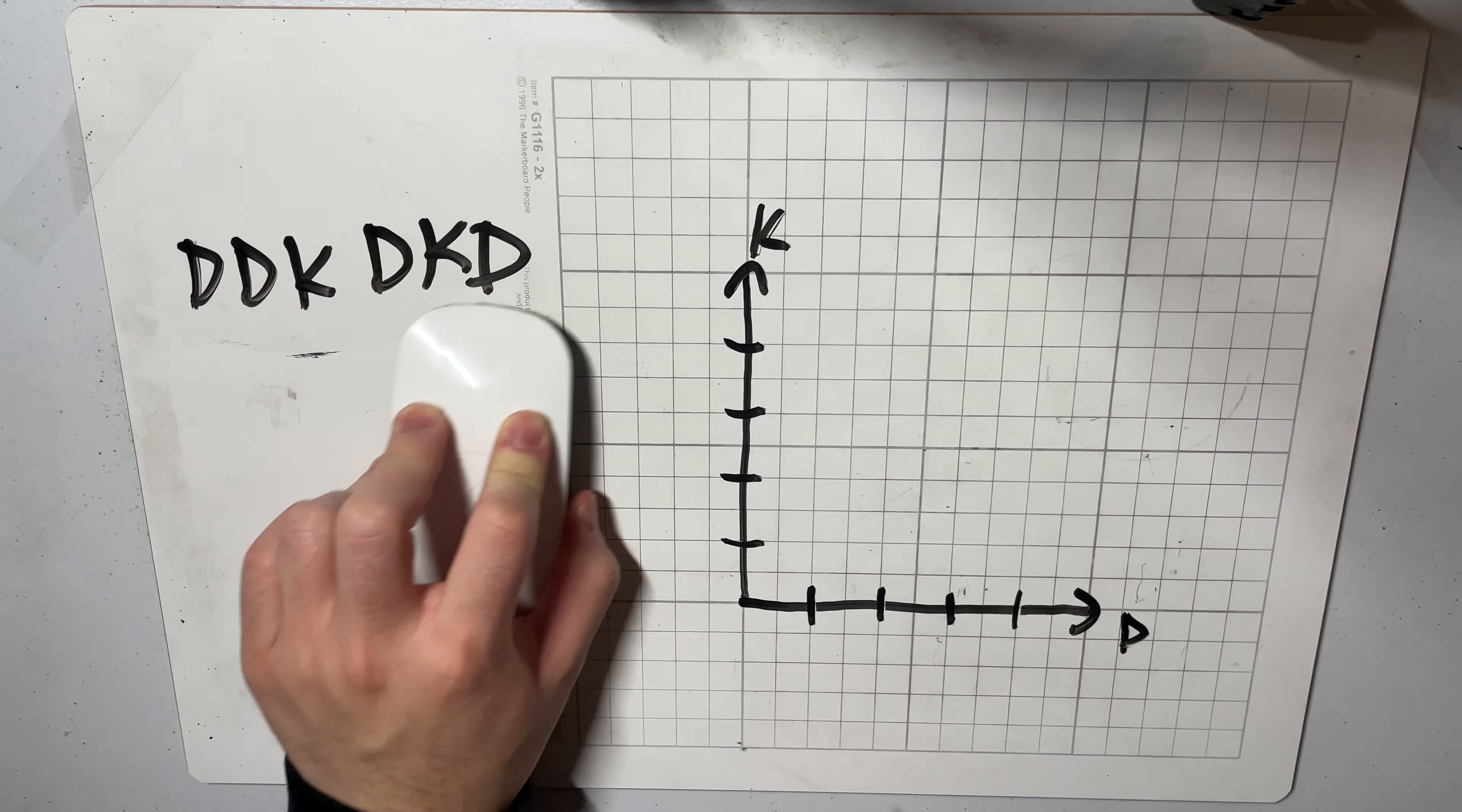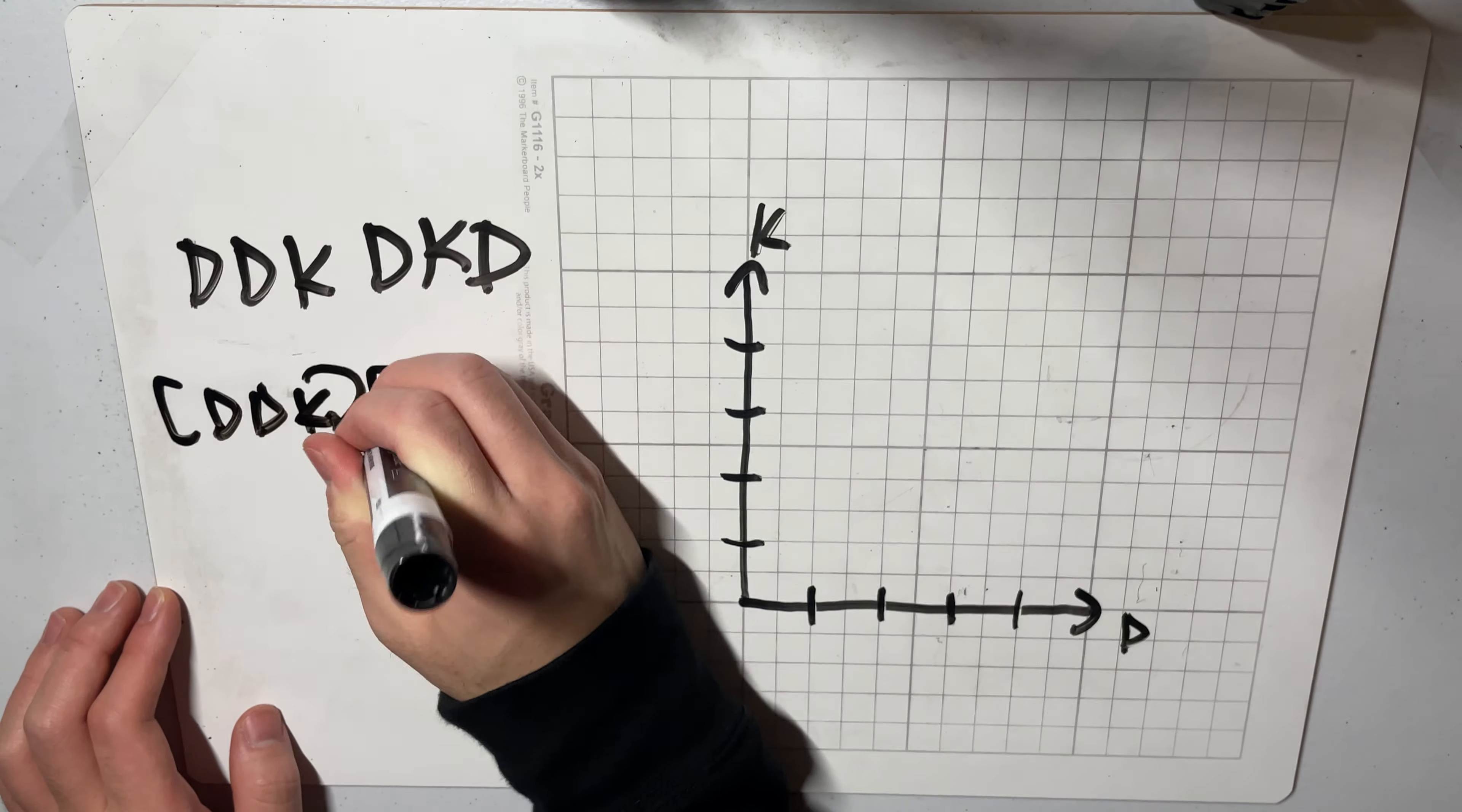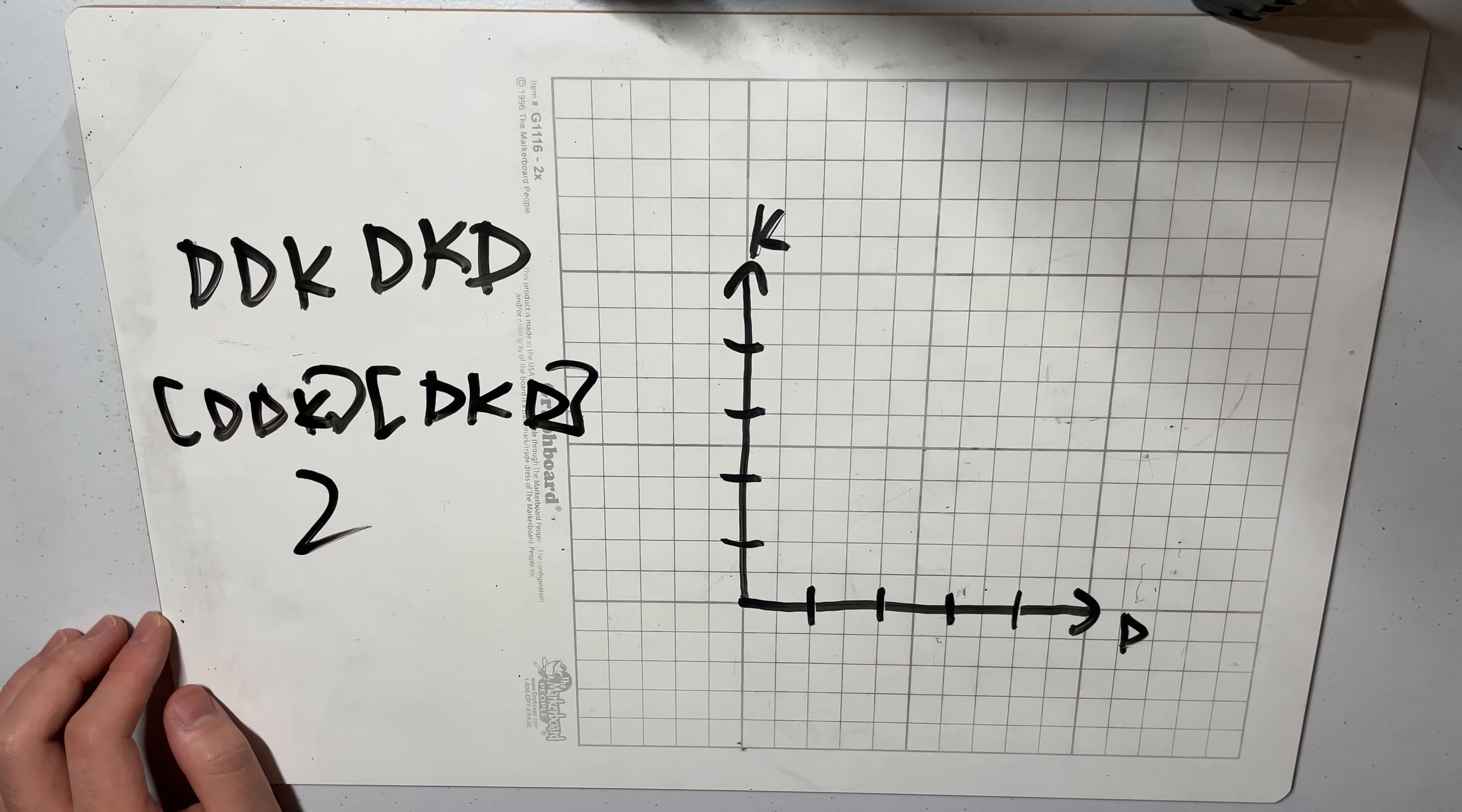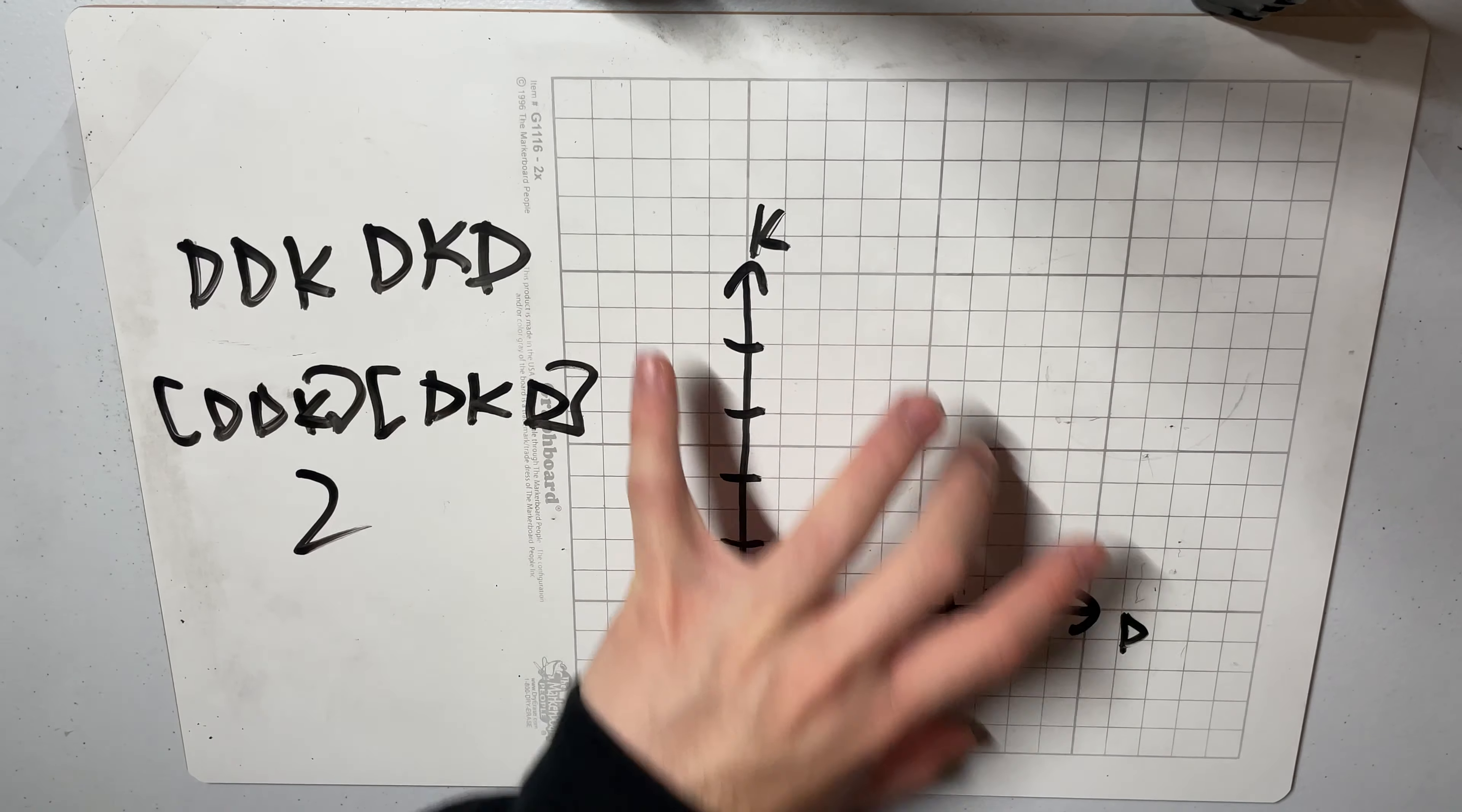In this case the answer is 2 because we can split it like this. We go DDK and then we can also go DKD and that's obviously two blocks. So this represents this string as a set of points on this plane.